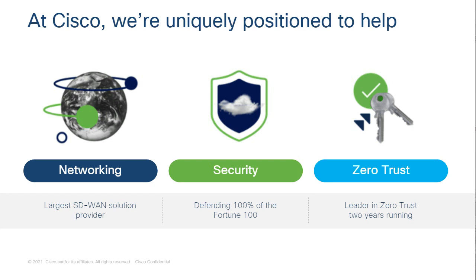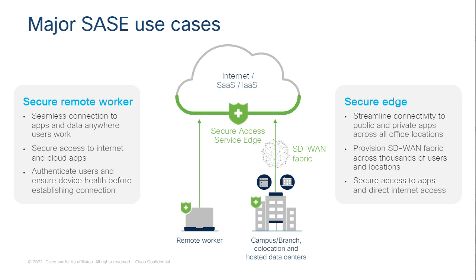We like to split up the SASE use cases into two major buckets. One is the secure remote worker — a remote worker working from home or perhaps a public location, where all they have is their endpoint and they're connecting directly to their applications. The next would be your branch office — your SD-WAN fabric. As far as a security stack is concerned, whether you're a remote worker or connecting to a branch, the security is still provided. We deliver that through Umbrella, which is cloud delivered.